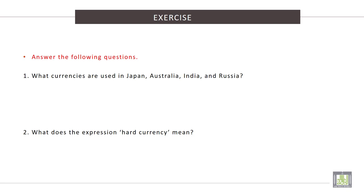The currency used in Japan is called yen. In Australia is called dollar. In India is called rupee. And in Russia is called ruble.